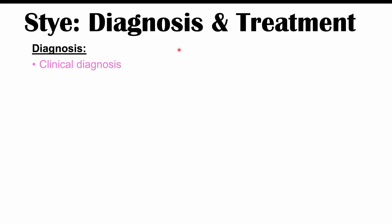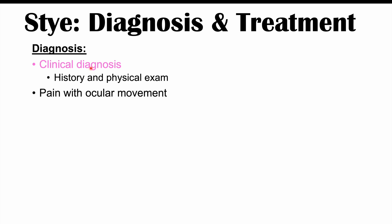Clinicians diagnose a stye clinically — simply seeing the stye is enough to make the diagnosis through history and physical examination. Importantly, if there is pain with ocular movement when the patient moves their eyes, this is something that shouldn't happen with a stye and is instead indicative of orbital cellulitis, which is a more serious ophthalmic condition.